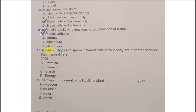Next question. Apart from eggs and sperm, different cells in your body are different because they have different options are A. Protein, B. Vitamins, C. Starch and D. Energy. The correct one is the A. Proteins.